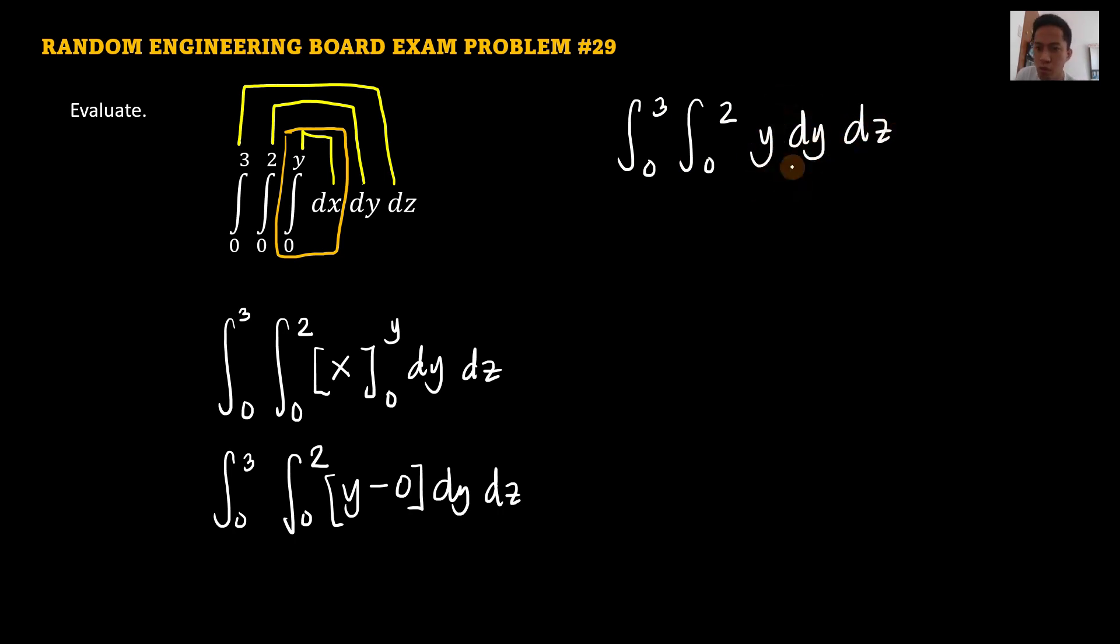So we now go to dy, since that's the inner function or inner derivative. Here, we just evaluate this. And then finally, after you evaluate that, evaluate the dz, and then we're done solving this problem.